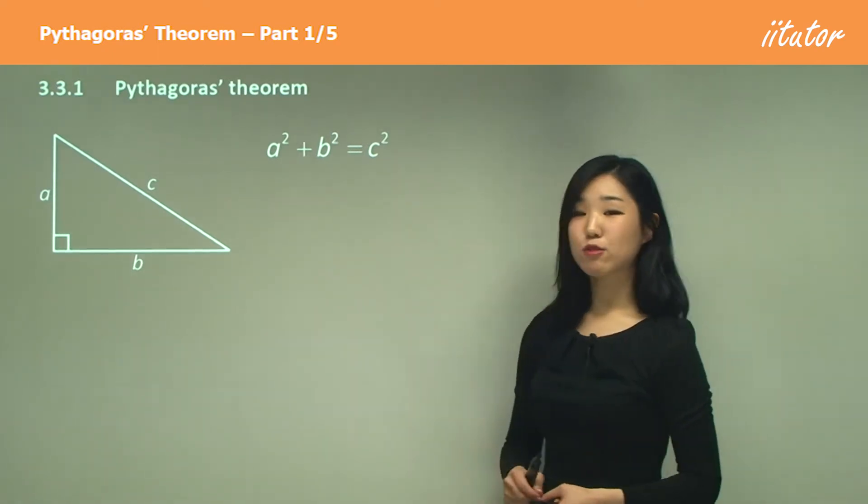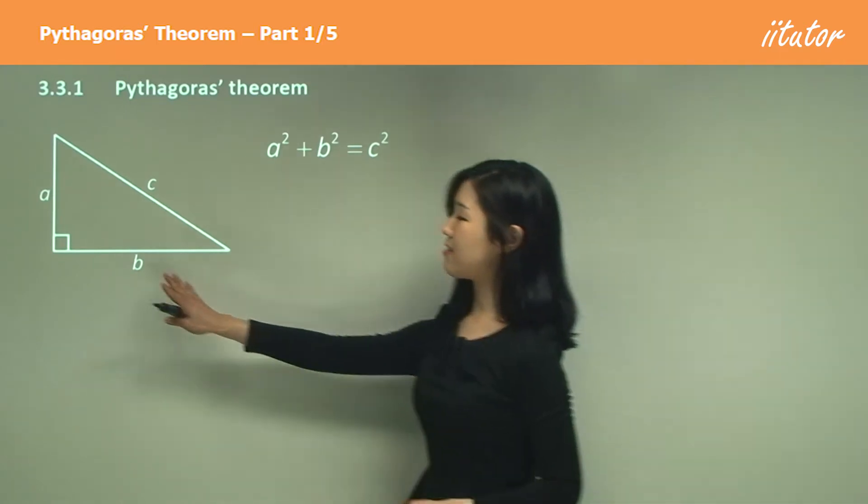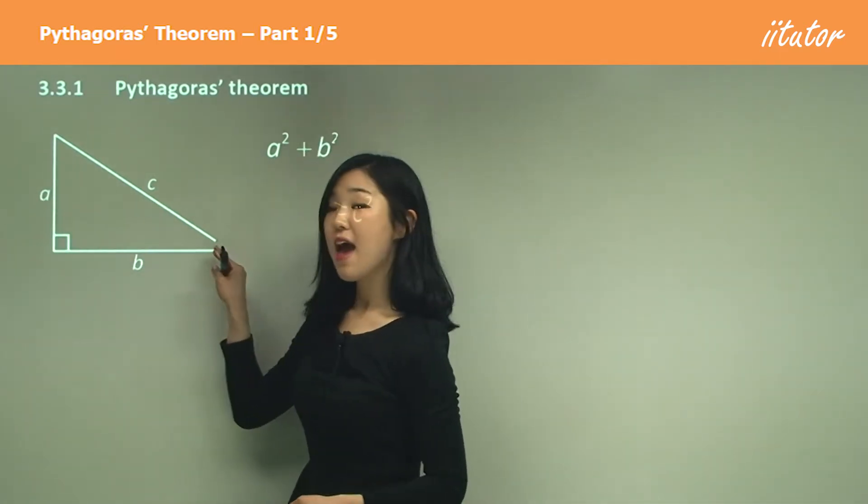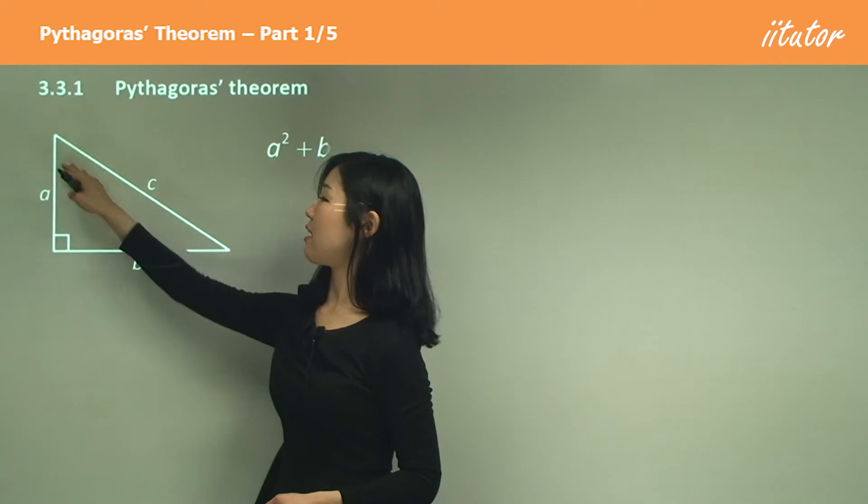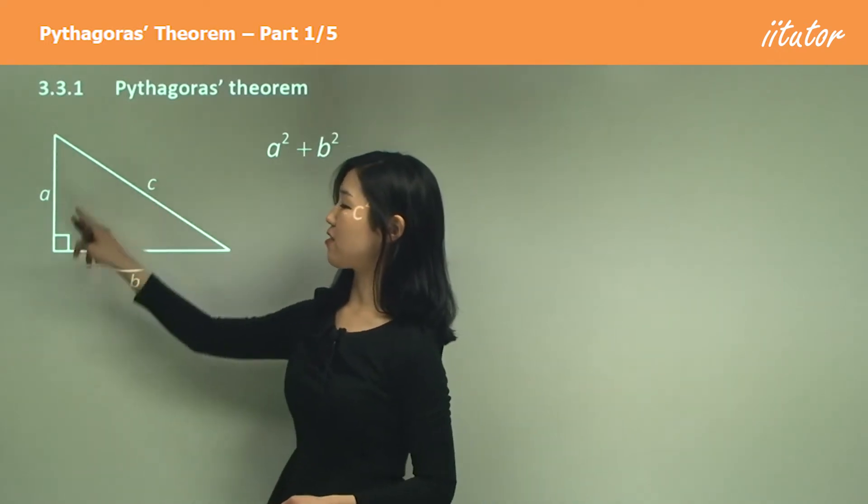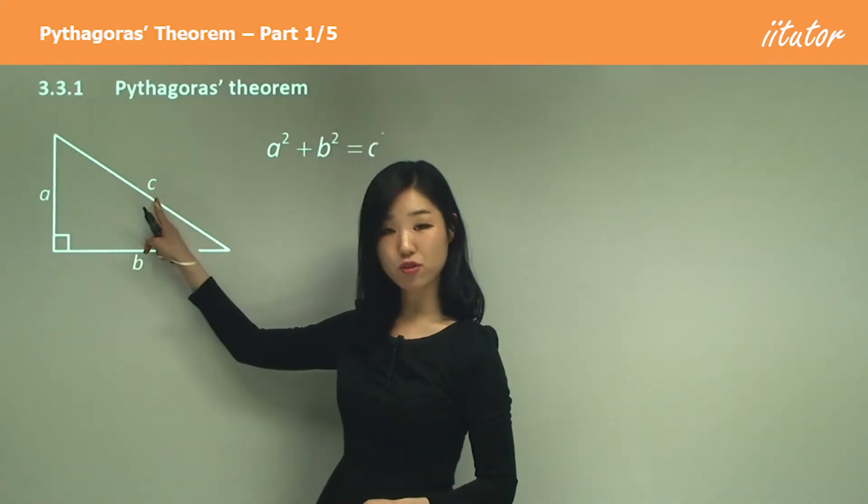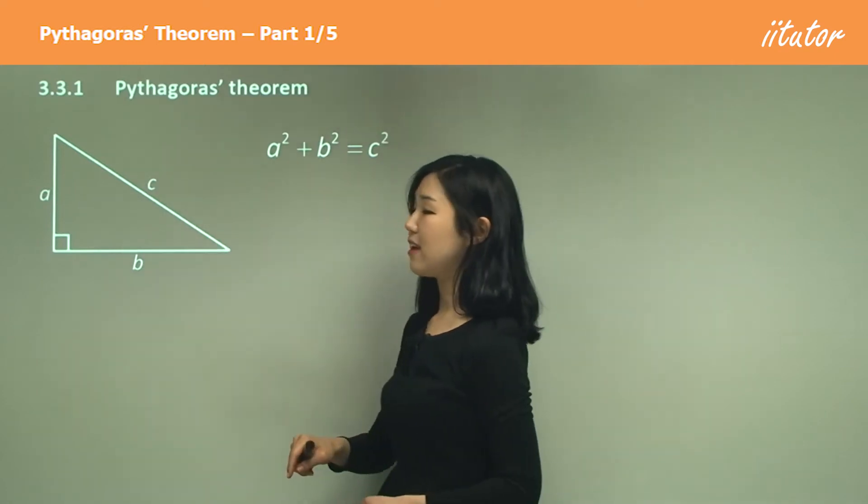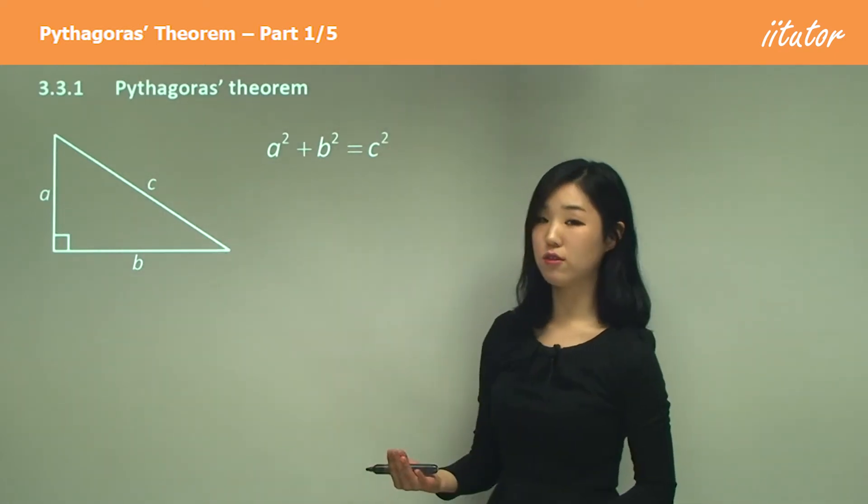In any right angle triangle that looks like this and it has two sides A, B, and the hypotenuse C. Remember, the longest side that's opposite the right angle is the hypotenuse, so I'm going to call that C. Make sure you know what the hypotenuse is.